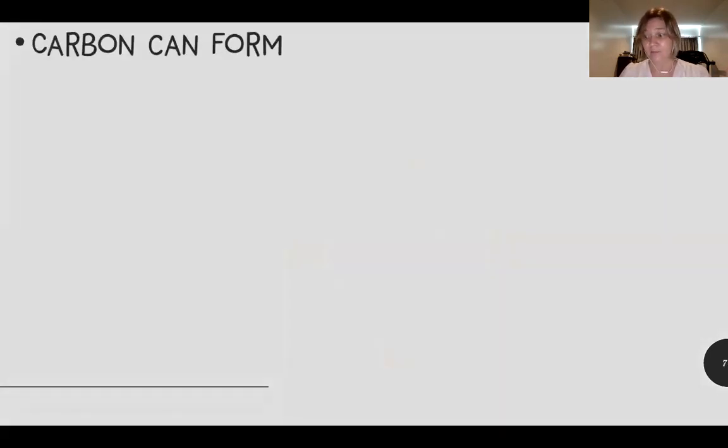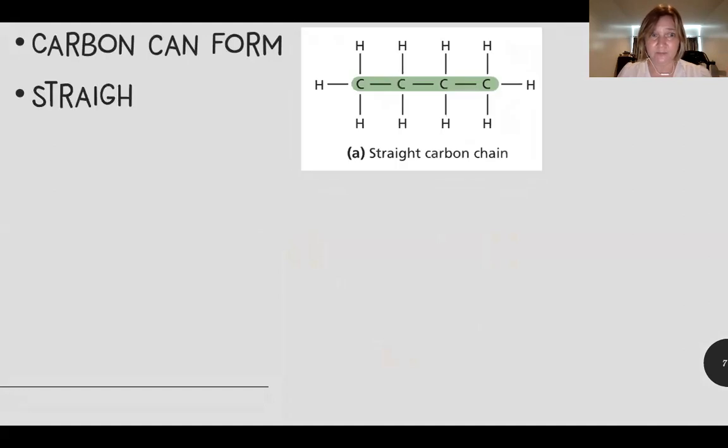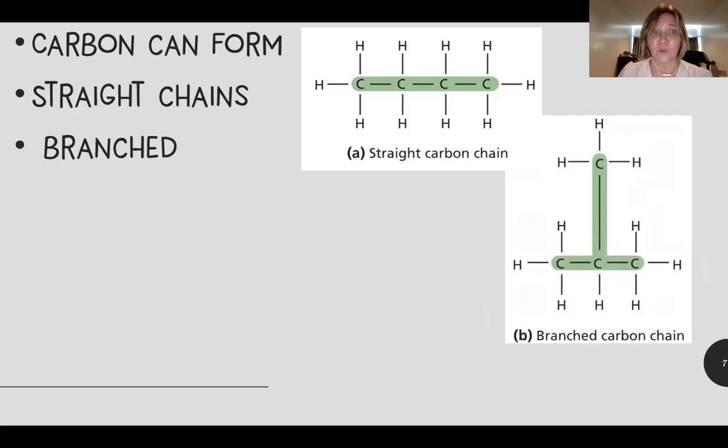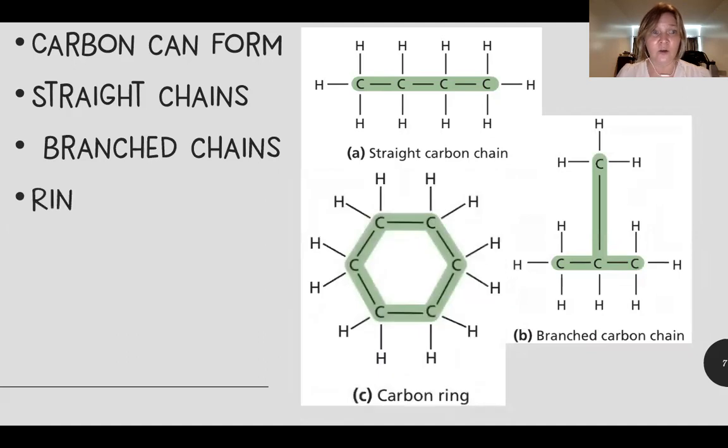Carbon can form straight chains. It can also form branched chains. And something that's very unique to carbon is that it can form rings. It can bond to itself and form straight chains, branched chains, and rings.